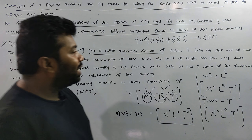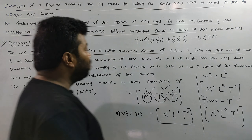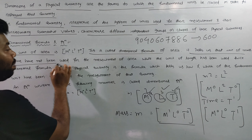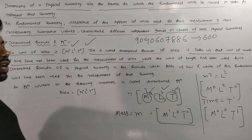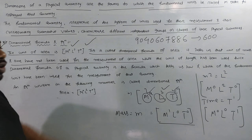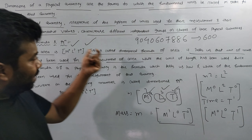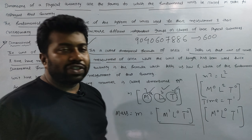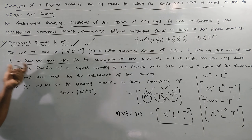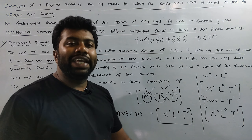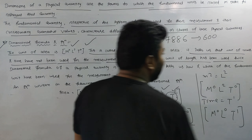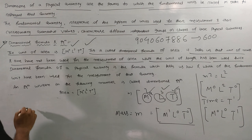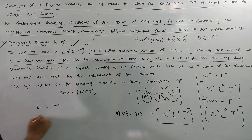The dimensional formula of area tells us that the units of mass and time have not been used for the measurement of area. M⁰ means mass has power zero — so there is no mass in area measurement. While the unit of length has been used twice — L², which corresponds to meter square.